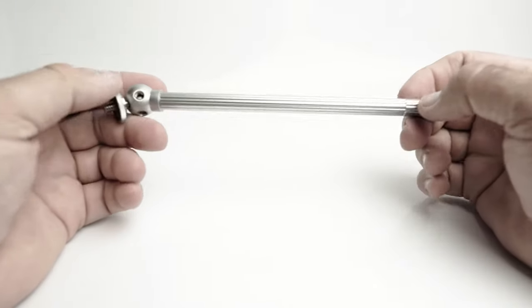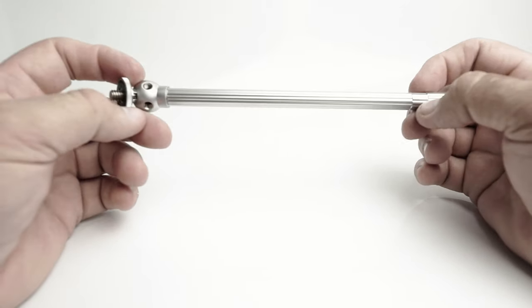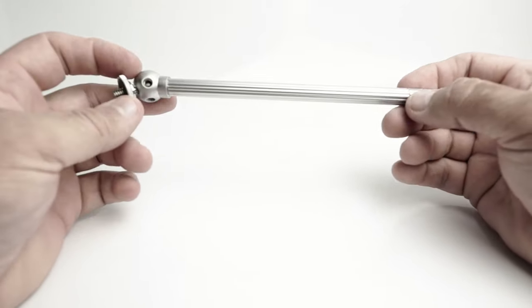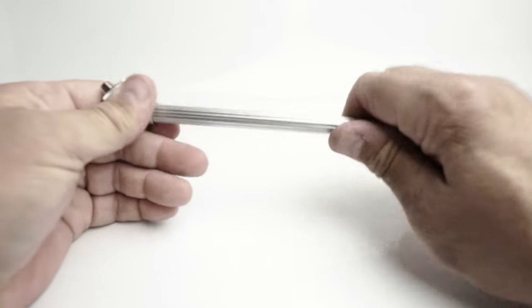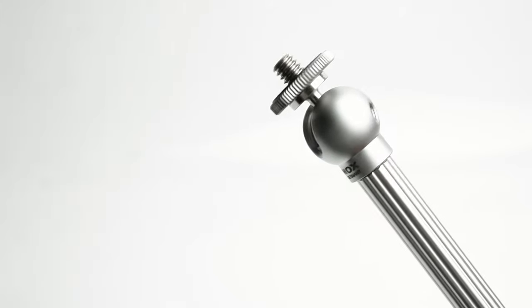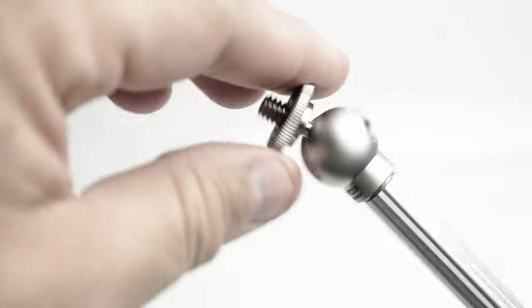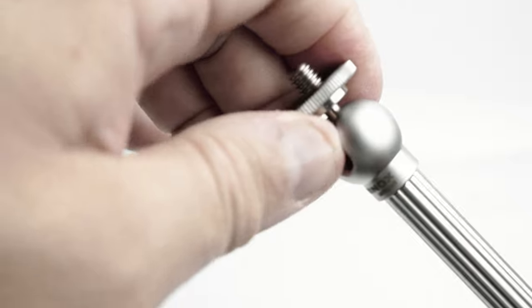Now the keen eyed among you will have noticed that this tripod has one leg and a ball and socket head. So if I loosen this, the head flops around and if I tighten it, it locks up again.